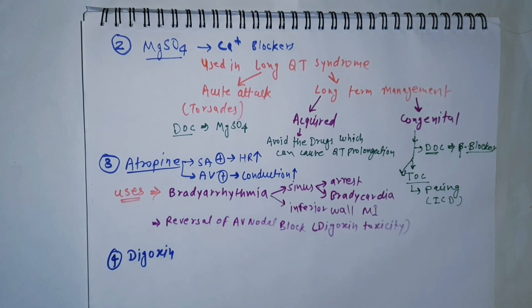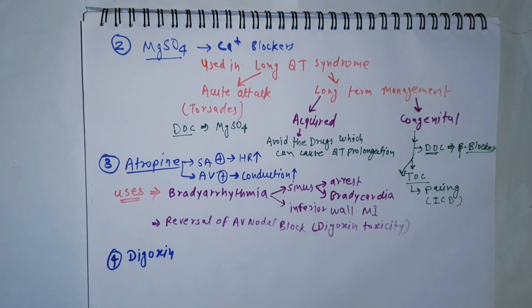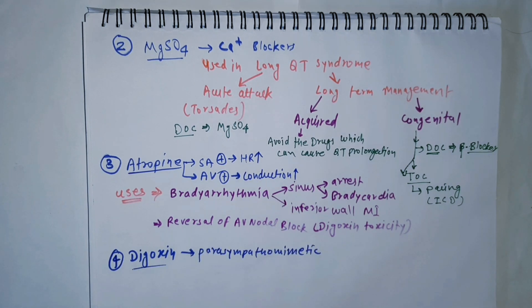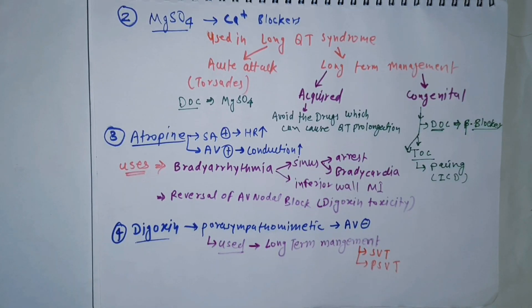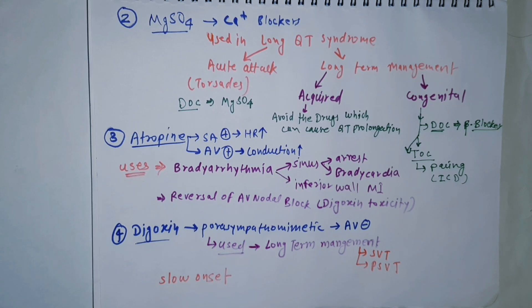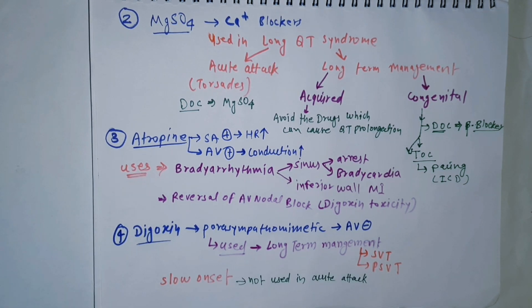One more drug in class 5 is digoxin, which acts as a parasympathomimetic drug causing AV blocking. It is used for long-term management of SVT and PSVT. Due to its slow onset, it cannot be used in acute attacks.